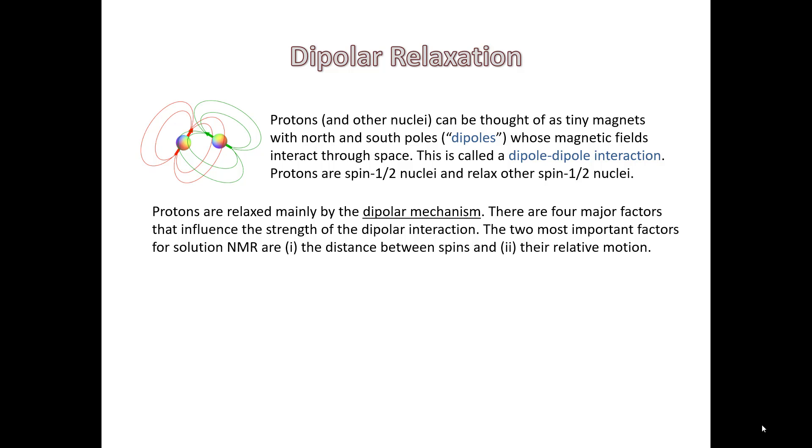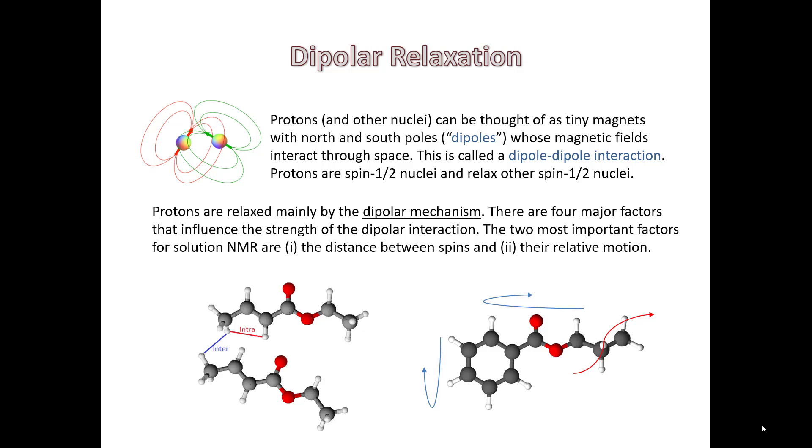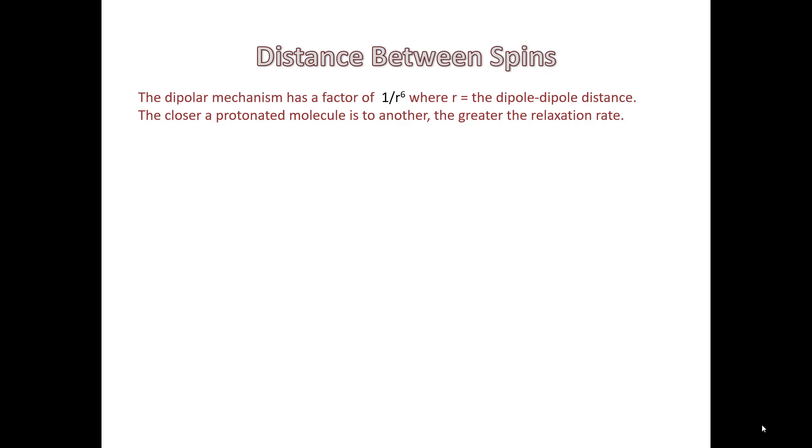There are four major factors that influence the strength of this dipolar interaction. The two most important factors for solution NMR are the distance between spins—we may have intramolecular relaxation, and if there's other molecules nearby that have protons, we'll have intermolecular relaxation. Similarly, the way that a molecule moves in solution, how it can rotate about its axis, makes a big difference.